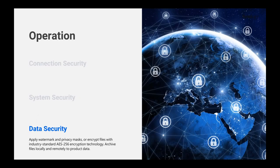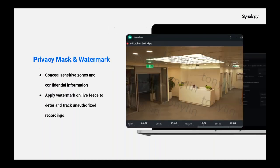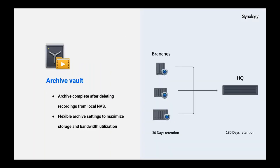Now, let's consider the worst case scenario — when a user's credentials have been leaked and an unauthorized person has logged in. What can we do to protect the data? On the data security level, there are three features in Surveillance Station that can help businesses protect their data effectively. First, Synology NAS implements industry-standard AES-256 encryption technology, ensuring that data is protected from unauthorized access even when credentials have been breached. Secondly, setting up privacy masks on live views can conceal confidential information from being captured, protecting business intelligence. Moreover, using watermarks on live feeds can deter and track unauthorized recordings. Lastly, Synology Surveillance Station offers diverse methods to achieve archiving. Archive Vault is a tool that helps users accomplish archiving — with customizable tasks, businesses can maximize storage utilization while streamlining daily operations. For instance, recordings can be saved on the NAS for 30 days, after which they will be archived to a secondary NAS. The archived tasks can be set to perform after working hours so it doesn't impact network speed during peak hours.